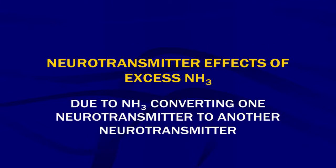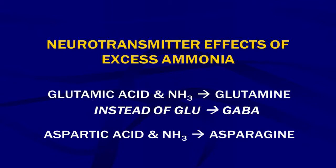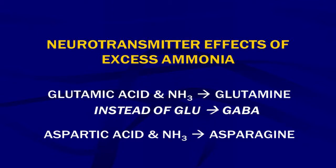Neurotransmitter effects of excess ammonia are due to ammonia converting one neurotransmitter into another. For example, the neurotransmitter effects of excess ammonia include glutamic acid combining with ammonia to become glutamine. So with excess glutamic acid and too much ammonia, it will all be forced into glutamine.